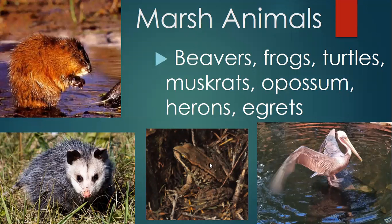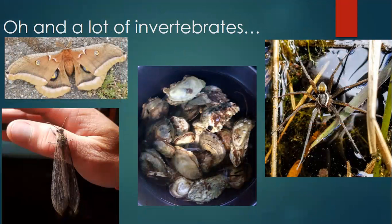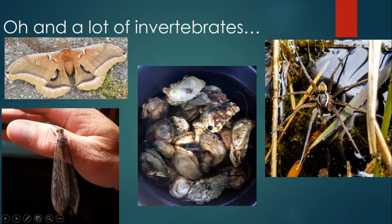Lots of animals like to live in marshes: the beaver, the possum, the American toad, and of course the brown pelican, along with many other species. Invertebrates love marshes — lots of moth and insect species. Because marshes can be tidal and non-tidal, you also get a lot of shellfish. And there's the fishing spider, just waiting for a small minnow to come along.